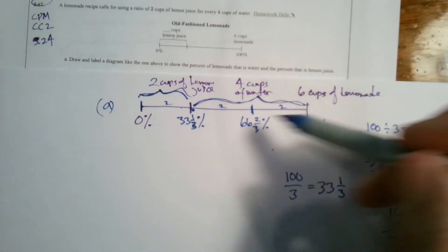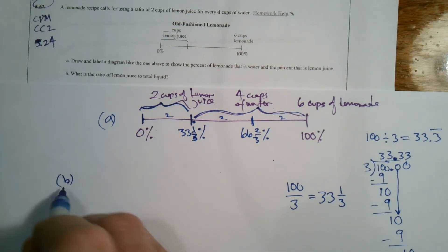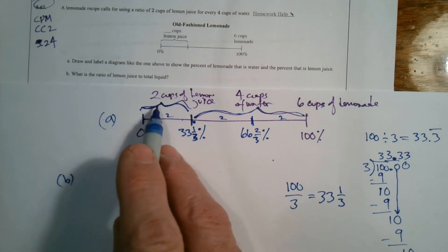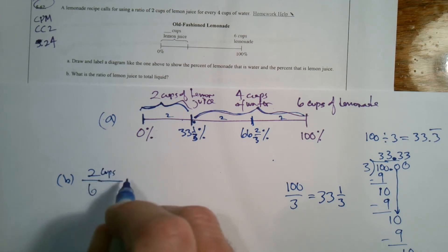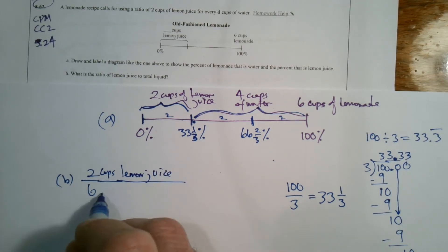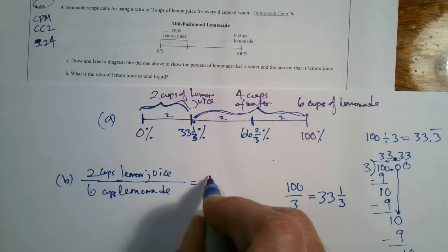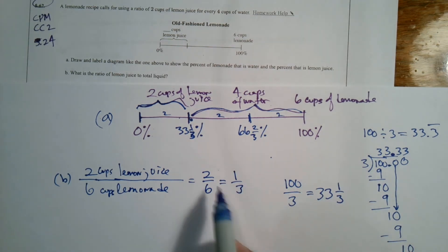So there's the diagram that helps us for Part A. This is going to show those percentages. So let's answer the question. Part B says, what is the ratio of lemon juice to total liquid? The ratio from lemon juice to total liquid would be 2 over 6. It's 2 cups lemon juice over 6 cups lemonade. The whole liquid is the whole lemonade. Total liquid is the lemonade. So lemon juice to lemonade can be written as a fraction 2 to 6, which actually can be simplified to be 1/3, one to three.